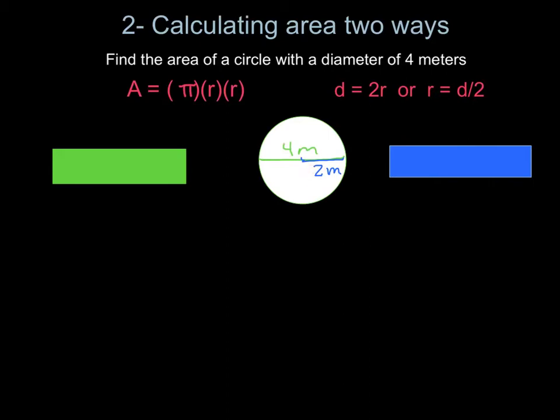The first way we are going to calculate is using pi as 3.14. Remember, this is an estimated value of pi since pi is a never-ending number. We just rounded it to the hundredths to make it easier for ourselves. So let's plug in the equation.